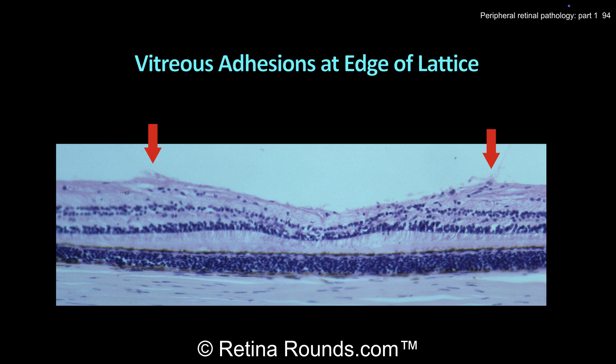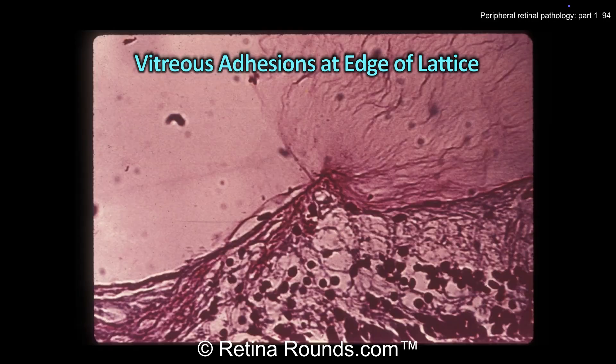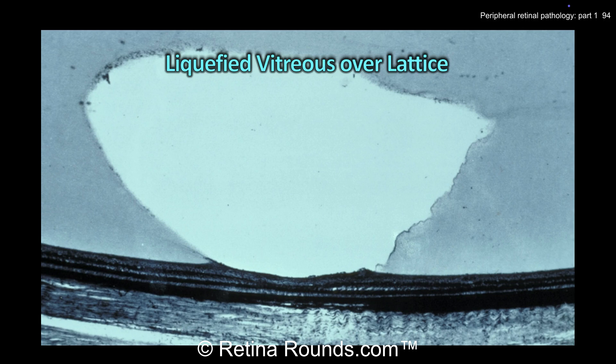It's important to remember that vitreo-retinal adhesions are very tight at the edge of lattice. In this histopathology slide, the central excavation represents a scalloped area of atrophy within an area of lattice degeneration. The red arrows point to the edge of lattice, where you can see vitreous remnants adherent at the edge. When performing vitrectomy for lattice-associated retinal detachments, it's important to elevate the vitreous 360 degrees around the area of lattice and trim vitreous remnants at the edge. Pulling too hard on the overlying vitreous may result in larger or additional retinal breaks. This slide also demonstrates the tight vitreo-retinal adhesions at the edge, and here we can see a bursa of liquefied vitreous overlying an area of lattice degeneration, which is a typical anatomic finding.